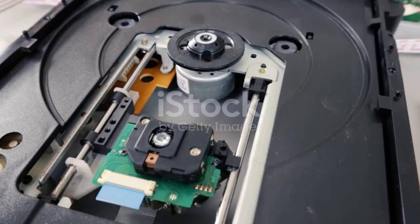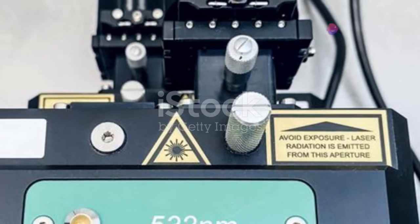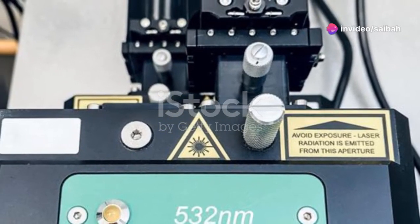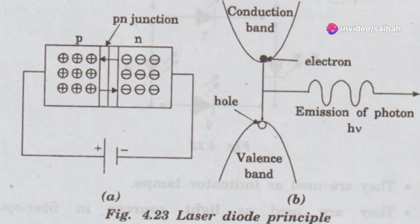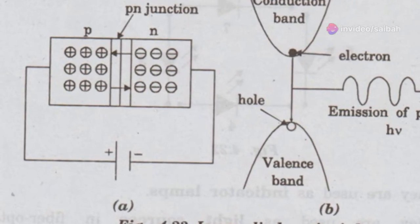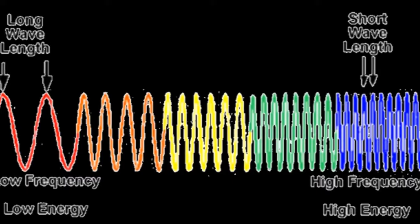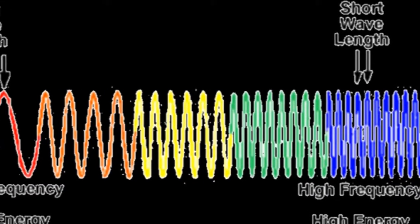Next up is spontaneous emission. After their brief stint in the high energy state, electrons fall back down, recombining with holes. This process releases photons, the basic units of light. The frequency of these photons depends on the energy difference between the two levels.